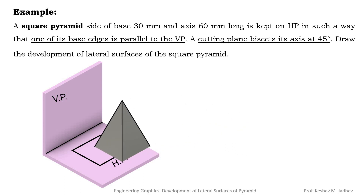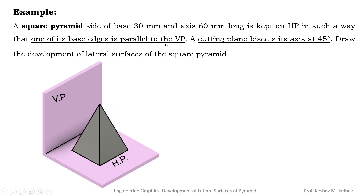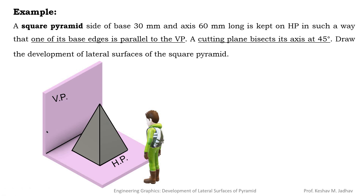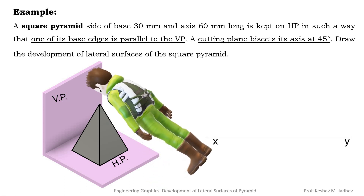We can keep the square pyramid on the horizontal plane so that this condition is satisfied. To draw the front view and top view, we consider the observer looking at the object from the front direction. The intersection of the vertical plane and horizontal plane gives the XY line. Above the XY line we draw the front view and below it we draw the top view according to the first angle method of projection. Since the square shape is visible in the top view, we draw the top view first.